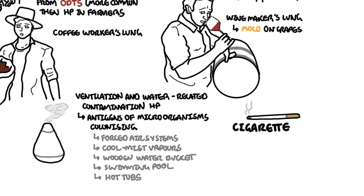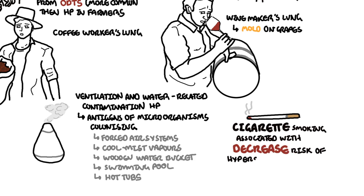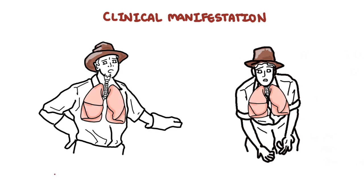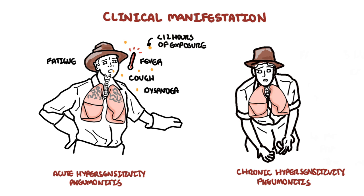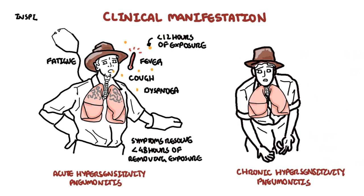Interestingly, cigarette smoking is associated with a decreased risk of hypersensitivity pneumonitis. Hypersensitivity pneumonitis is classified as acute or chronic, depending on the amount and frequency of antigen exposure. In acute hypersensitivity pneumonitis, the sensitized person develops fever, cough, and fatigue within 12 hours of a major exposure to the inciting antigen. After removal from the offending antigen, symptoms resolve within approximately 2 days, and physical examination will demonstrate inspiratory crackles.